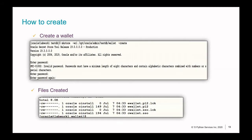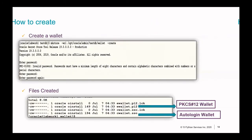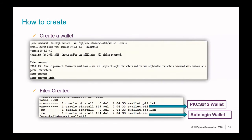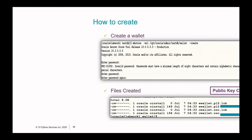When you create a wallet, two files are created: one is the ewallet.p12 — that's your PKCS12 wallet file containing your credentials. The other is cwallet.sso — your auto-login wallet file. By default, when you create a wallet using mkstore, it is an auto-login wallet. The moment you see a cwallet.sso file, it implies this is an auto-login wallet.